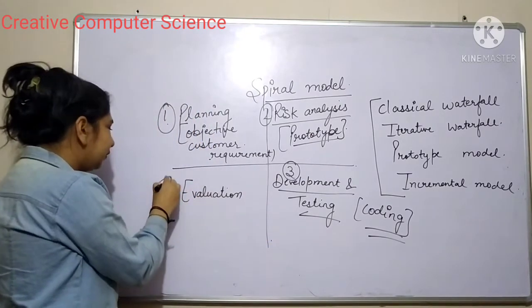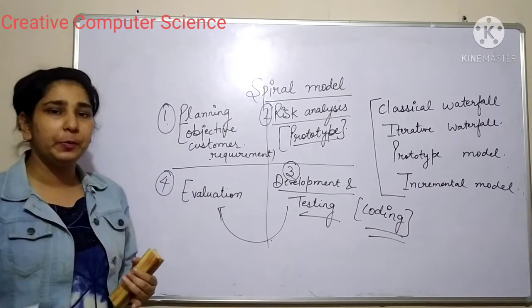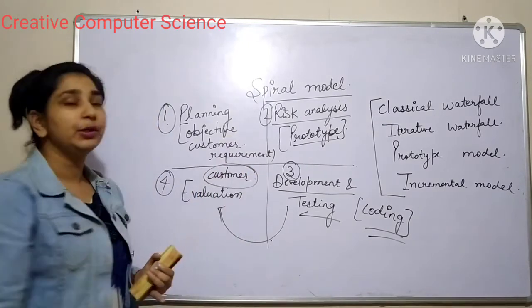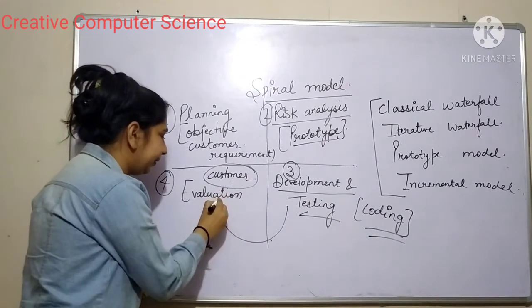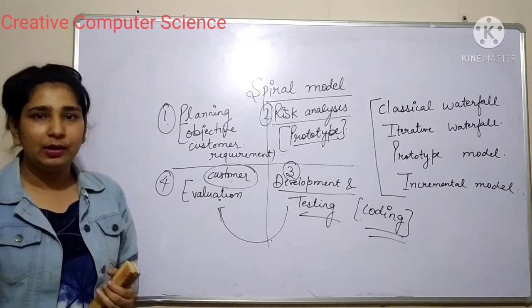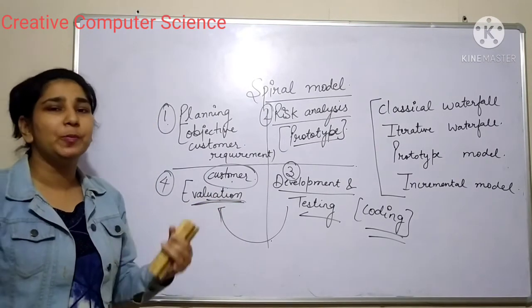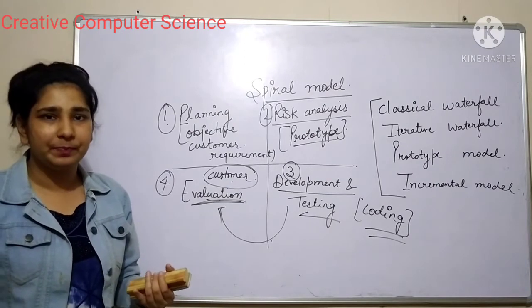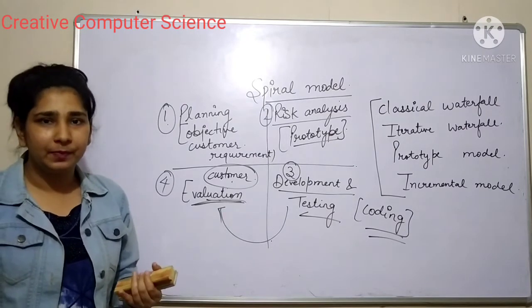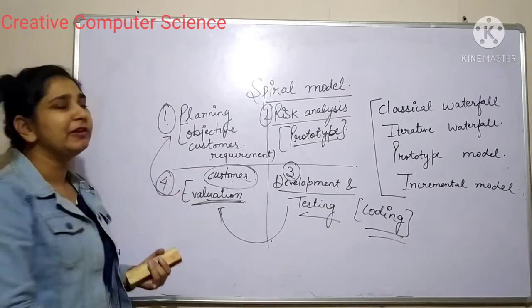Now what happens in the fourth phase? In the fourth phase, you will be giving your software product to your customer and your customer is going to evaluate your software product. It is going to give you feedback — it is going to check whether the software is right or not, or whether there should be some more operations or more functionalities. It is going to give the complete feedback to the software developer team.